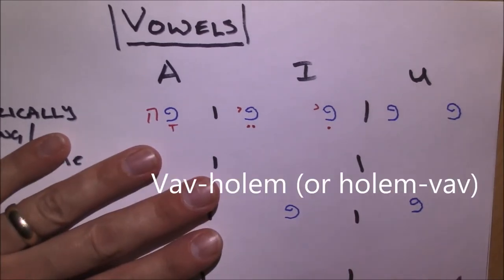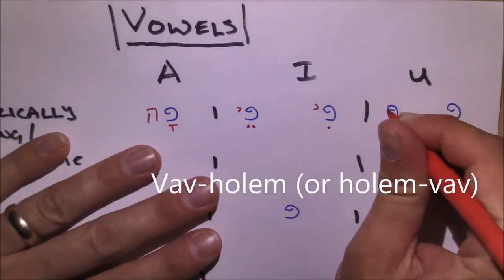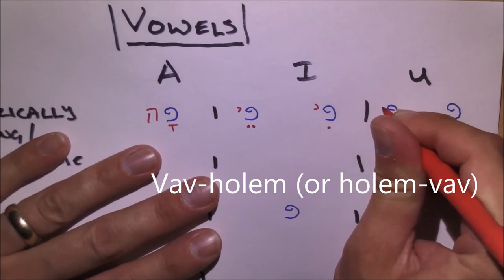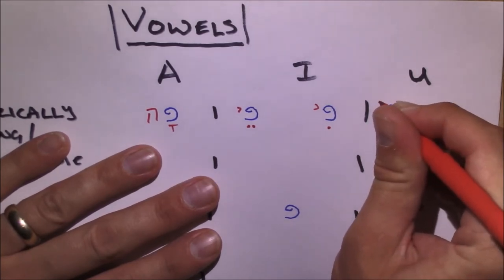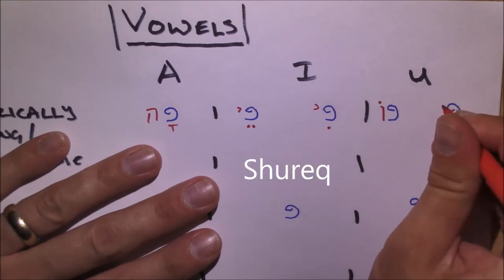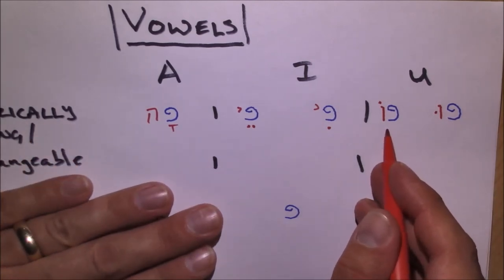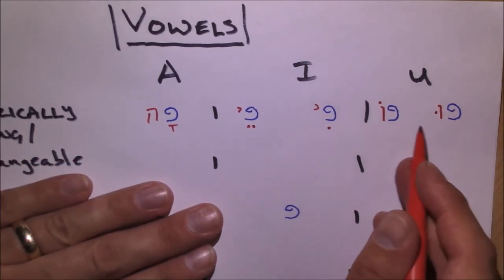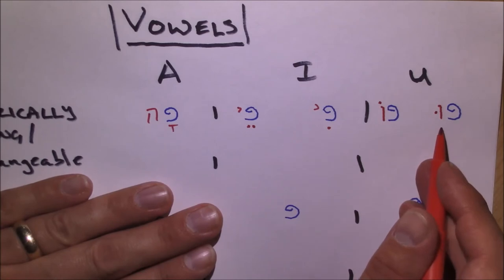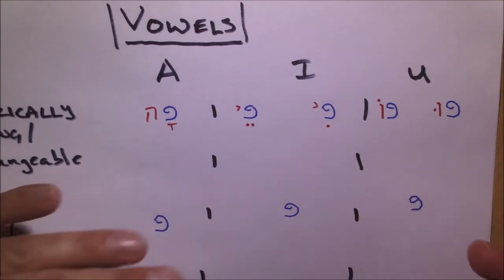Our next uses vavs in the U class. This is our vav holum, sometimes called the holum vav, which is a vav plus a holum over it, and the shurek, which is a vav with the dot right there. This is o, and this is oo. Notice they're not pronounced voh and vu, but oh and oo acting as vowel carriers in that way.